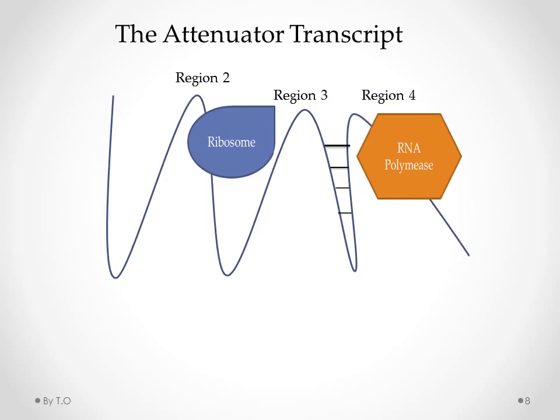When tryptophan levels are high, the ribosome does not pause and zips along the transcript from region 1 to region 2. Region 3 therefore cannot base pair with region 2 because it is being occupied by the ribosome, so instead it base pairs with region 4. Region 4 contains a termination sequence, and this gives the signal to stop transcription before it even gets to the first TRIP structural gene, which is TRIP E.